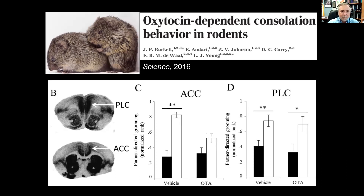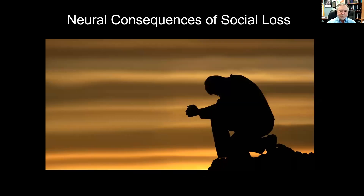This is another example of where the neurochemistry involved in maternal care can be adapted for other processes. We also looked at what happens when animals lose their partner. In humans, if someone in a long-term relationship loses their partner, it can cause increased incidence of depression, cardiovascular disease, decreased immune function — lots of physical and mental health problems. Probably we all know someone who was in a long-term relationship and when one partner dies, the other passes away not long afterward.